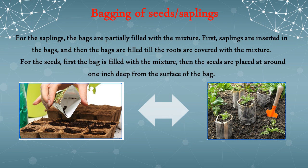The fourth step is bagging of seeds and saplings. For saplings, the bags are partially filled with the mixture first, the saplings are inserted, and then the bags are filled until the roots are covered with the mixture. For seeds, the bag is first filled with the mixture and then the seeds are placed at around one inch deep from the surface of the bag.